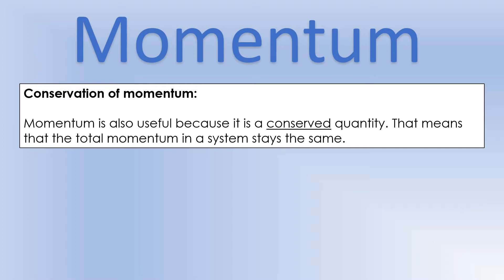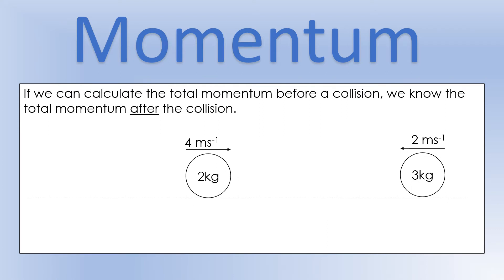Now let's talk about conservation of momentum. We notice experimentally that in collisions, momentum is conserved — meaning it stays the same. More specifically, the total momentum in a system stays the same. So if we calculate the total momentum before a collision, we know what the total momentum is after — and we can use that to solve for unknown quantities.